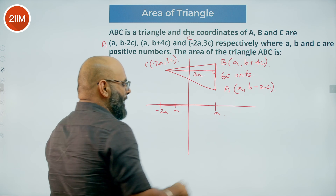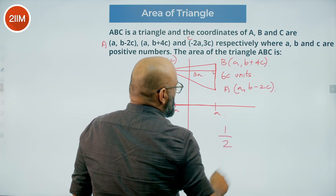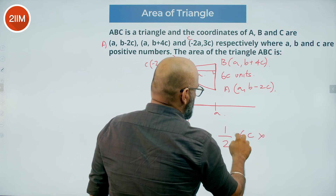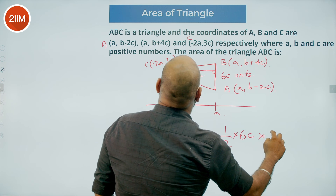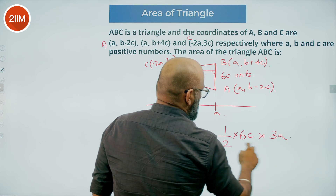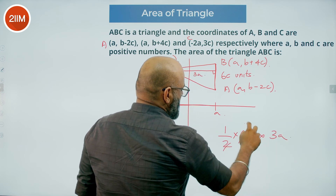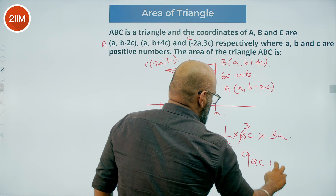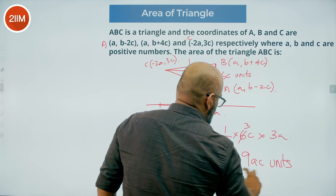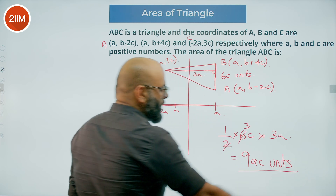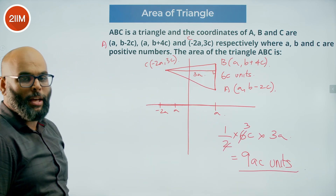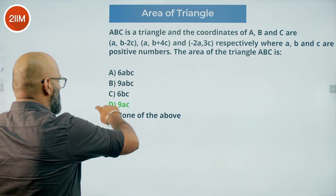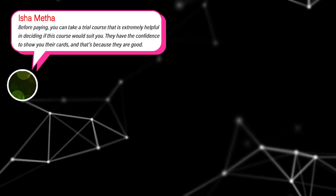So the height of the triangle is 3A units and the base is 6C units. Area = half of base times height = half of 6C times 3A. Simplifying, we get 9AC square units. So the answer is option D.